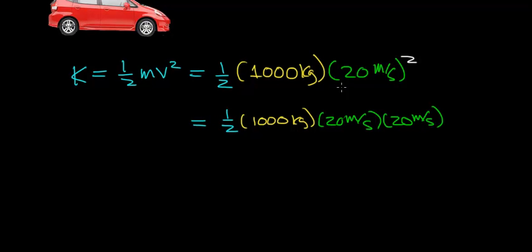So now what you're going to get is one-half of 1,000 kilograms, which works out to be 500 kilograms, and 20 times 20 is 400.